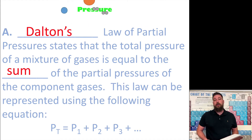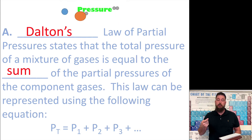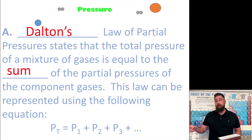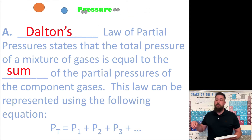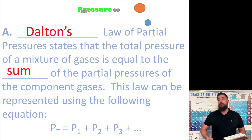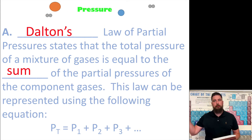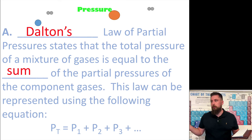What Dalton's Law of Partial Pressure states is that if you have a sample of gas and it's a mixture — you have multiple types of gases in there — each individual pressure for each gas will add up to the total pressure. Each gas in the mixture is going to apply a certain pressure, and if you add up all those pressures, it's going to equal the total pressure of that mixture. A really great example of this is the air around us, which provides a certain pressure to our body.